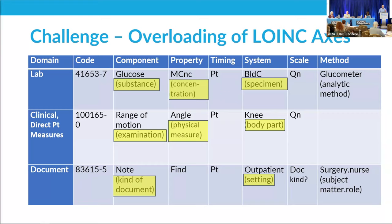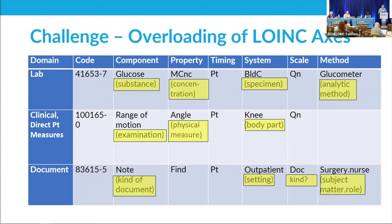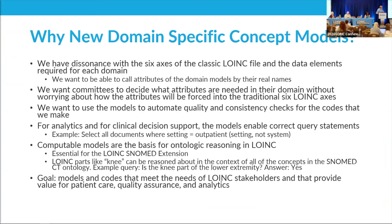The point is we've overloaded the axes within the traditional model, so they don't have consistent meaning. If I'm talking about documents, 'system' doesn't have any meaning consistent with other kinds of things. We've created this dissonance between the names of the six primary axes and what they actually contain, based on domains.